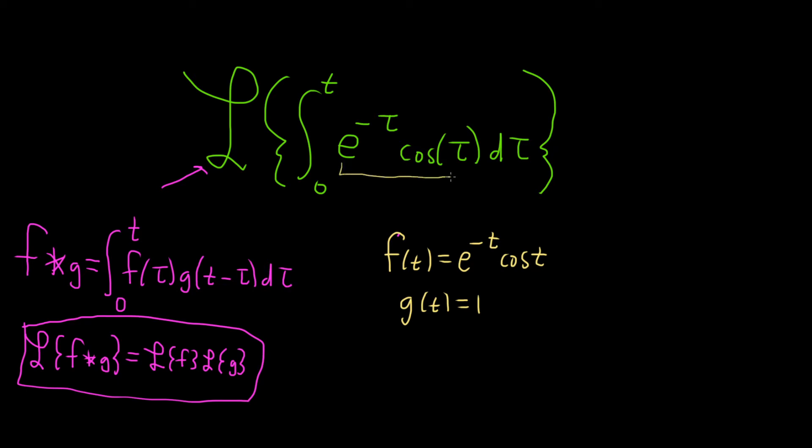This part here is your f of tau and then your g of t minus tau. Well that's right here, it's this invisible one which is no longer invisible. So that's your g of t minus tau, and this is your f of tau. So it does match. It's f of tau, g of t minus tau.